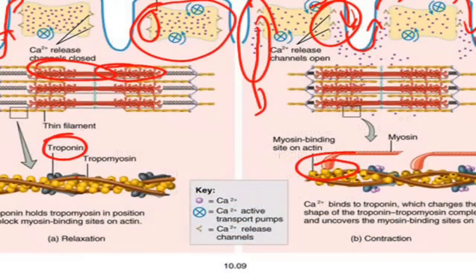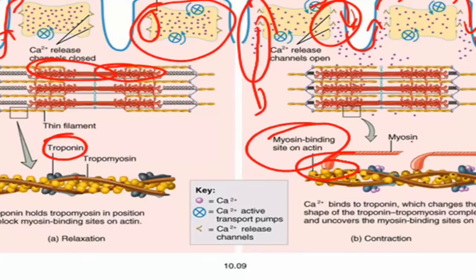The contraction part starts with the binding of myosin heads on the actin. Calcium allows this to happen because it reveals the binding sites on the actin, which at rest are covered by the troponin.